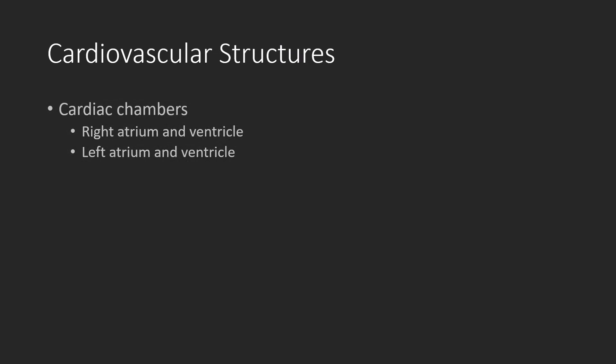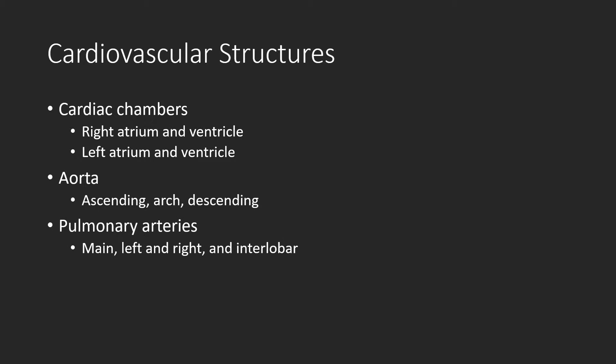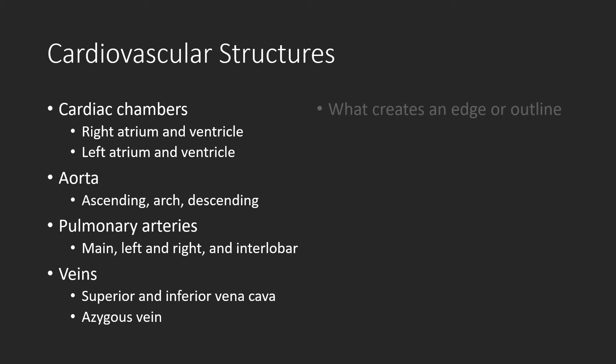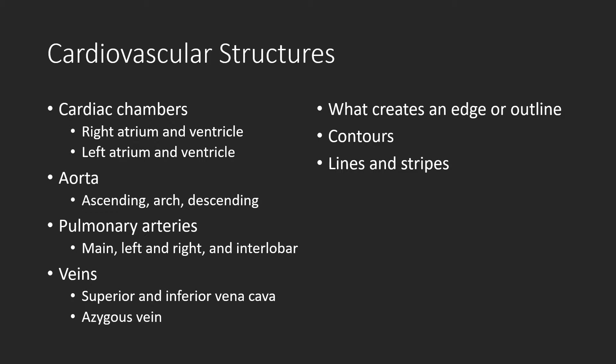The cardiovascular structures we'll be focusing on include the cardiac chambers — right atrium, right ventricle, left atrium, and left ventricle — then the aorta: ascending aorta, aortic arch, and descending aorta. Also the pulmonary arteries — main, left, right, and interlobar — some veins including the SVC, IVC, and azygous vein. We'll then focus on what creates the edges or outlines of these structures: contours, lines, and stripes.